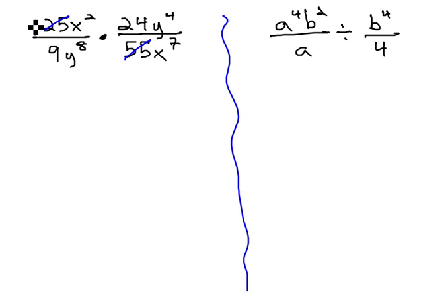25 and 55 are both divisible by 5, leaving us 5 and 11. 24 and 9 are both divisible by 3, leaving us 3 and 8.